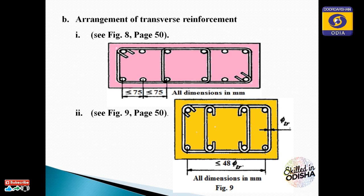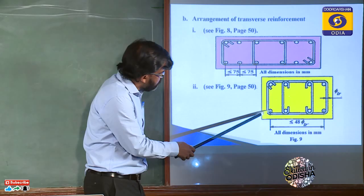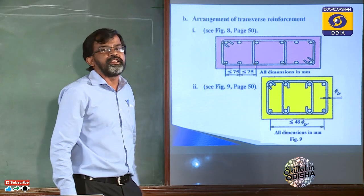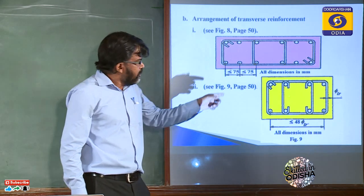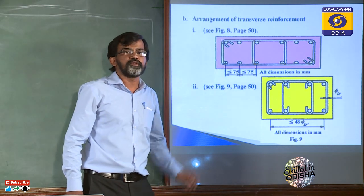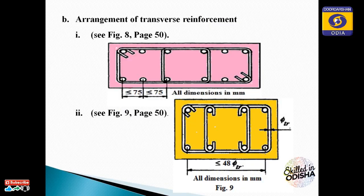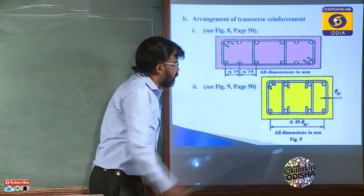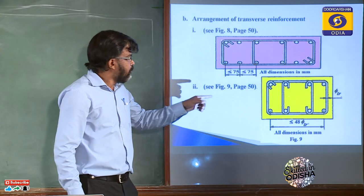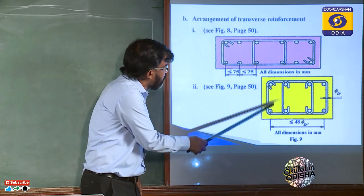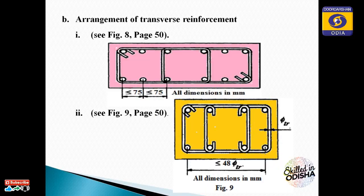In the second case, if the distance between two longitudinal reinforcements is more than 48φTR — where φ means diameter and TR means transverse reinforcement diameter — then if the transverse reinforcement diameter is 6mm, 48×6 gives the threshold. If the distance is less than 48φTR, then the middle longitudinal reinforcement only needs to be tied by the transverse reinforcement in one direction; otherwise a different arrangement is required.